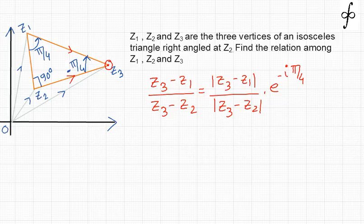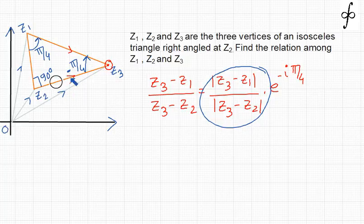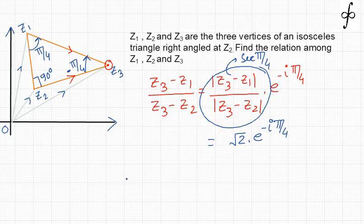Notice that |Z3 − Z1| represents the length of one vector and |Z3 − Z2| represents the length of another. We are looking at hypotenuse divided by base of the triangle — this is the hypotenuse and this is the base. The ratio equals sec(π/4), and since sec(π/4) = √2, this gives us √2 · e^(−iπ/4). That can be safely written as Equation 1.